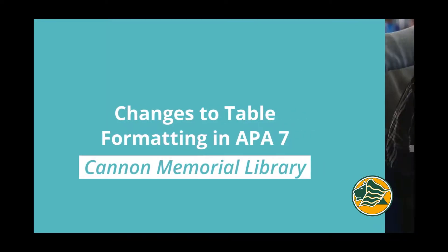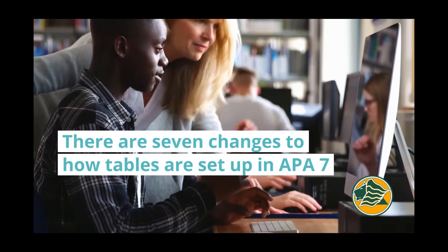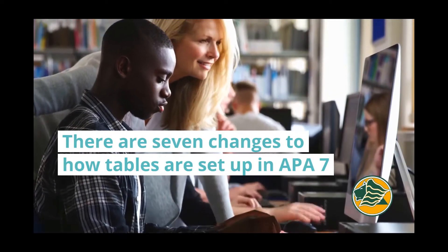There are seven key changes to the formatting of tables in APA 7th edition. For each change, I will show you how it looked in the 6th edition and then the new look in the 7th edition.